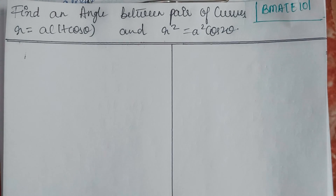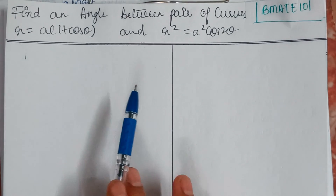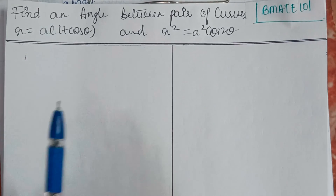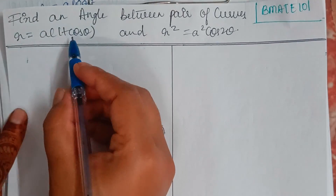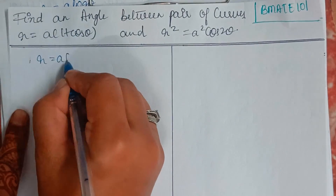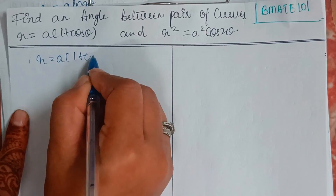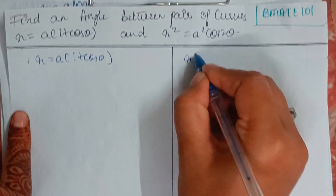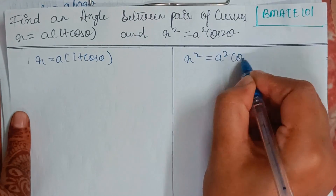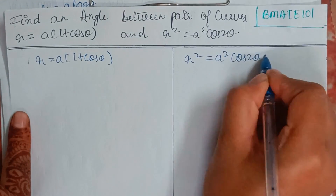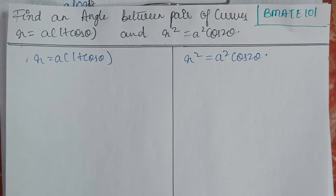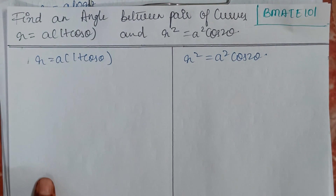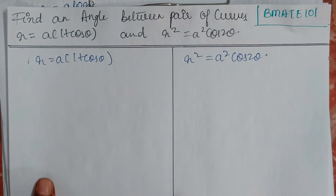Hello everyone, welcome back to my YouTube channel, Learn with Sumi. In this video we are going to find an angle between the pair of curves. The curves are given as r equals a into (1 + cos θ) and r² equals a² cos 2θ. We will solve this step by step. First, we'll take log on both sides.